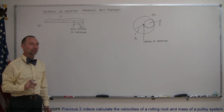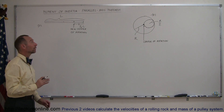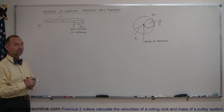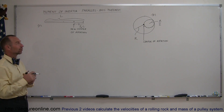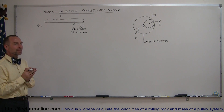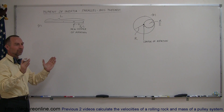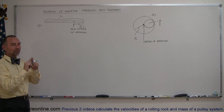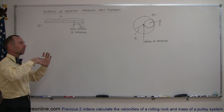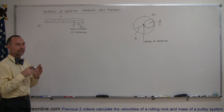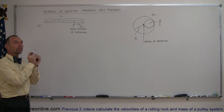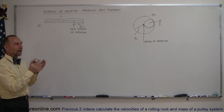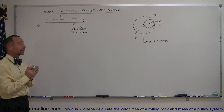Welcome to iLecture Online. Here's one last topic regarding the moment of inertia, which is called the parallel axis theorem. What that means is that if you have an object that is purely symmetrical, like a bar that rotates about its center or a disc that rotates about its center, and you move the point of rotation to a point other than its center, how do you find the moment of inertia of an object like that?